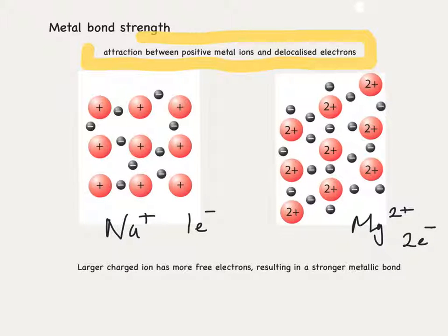So the larger charged ion has more free electrons, resulting in a stronger metallic bond.